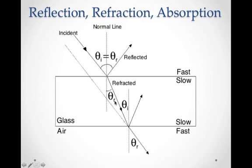This reflected theta-r is different from the refracted theta-r. Some light gets reflected, but light also goes through glass, so some of the light, when it changes speed going from fast to slow, gets bent toward the normal here. This refracted angle is smaller than the incident angle, so it gets bent and goes through the glass. While going through the glass, some of the light energy is warming the glass - it's being absorbed. So we get three things: reflection, refraction (the light bending), and absorption. Some of the energy is absorbed in the glass, and the glass warms up from the light going through it.